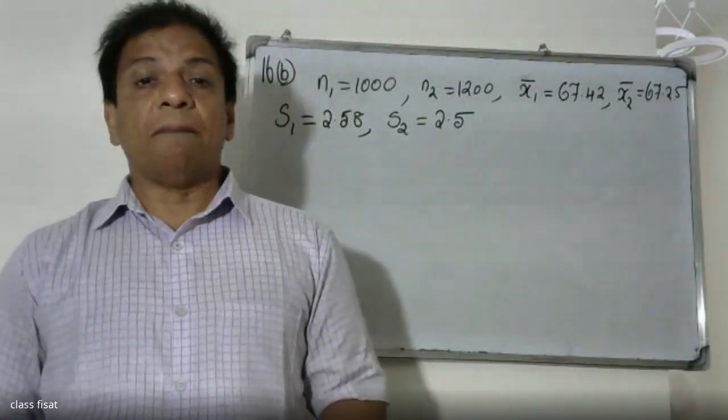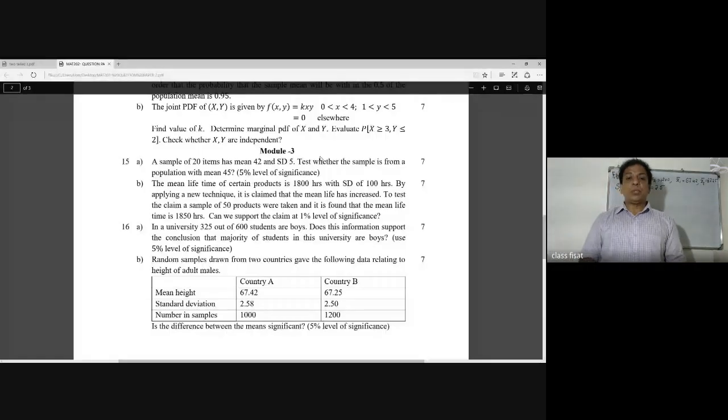Random samples drawn from two countries gave the following data relating to height of adult males. Country A, Country B. Mean height is 67.42 or 67.25. Standard deviation, Country A 2.58, Country B 2.5. Number of samples, Country A 1,000, Country B 1,200.